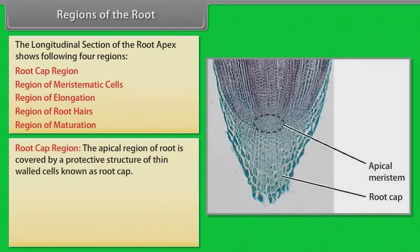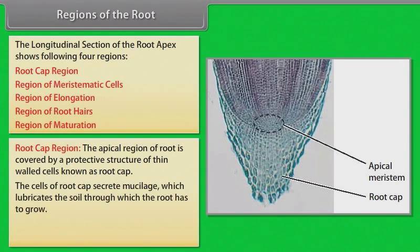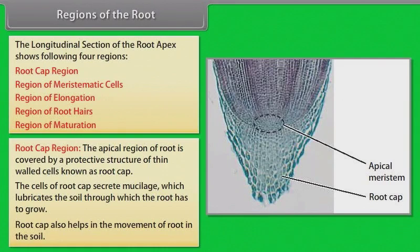Root cap region: The apical region of root is covered by a protective structure of thin-walled cells known as root cap. The cells of root cap secrete mucilage which lubricates the soil through which the root has to grow. Root cap also helps in the movement of root in the soil.